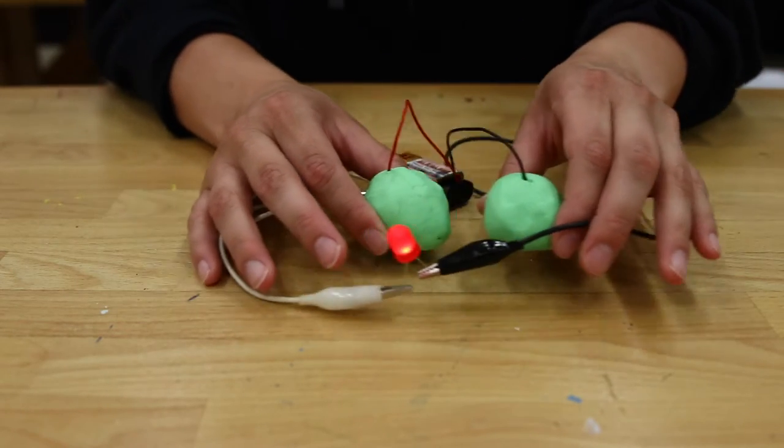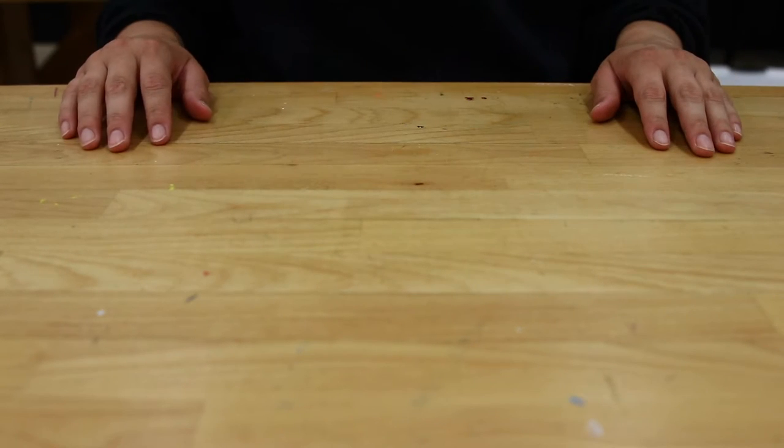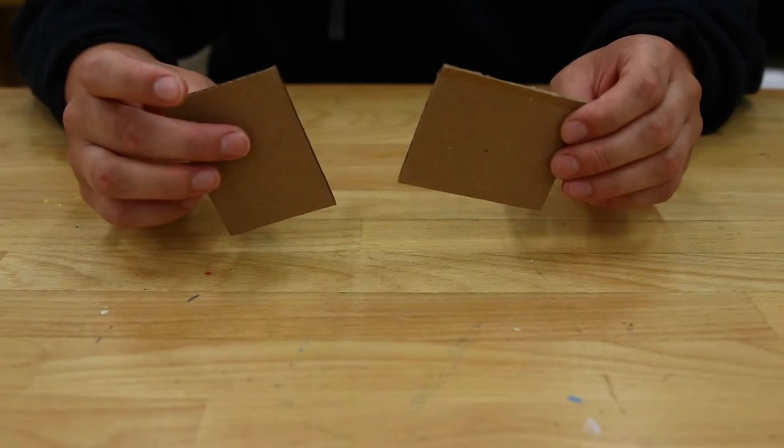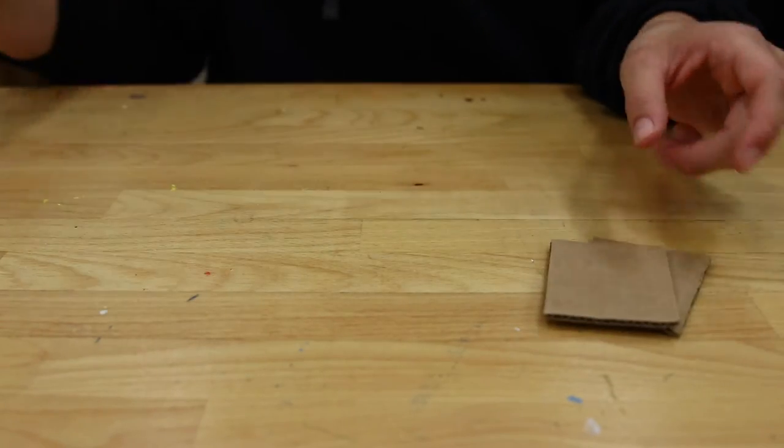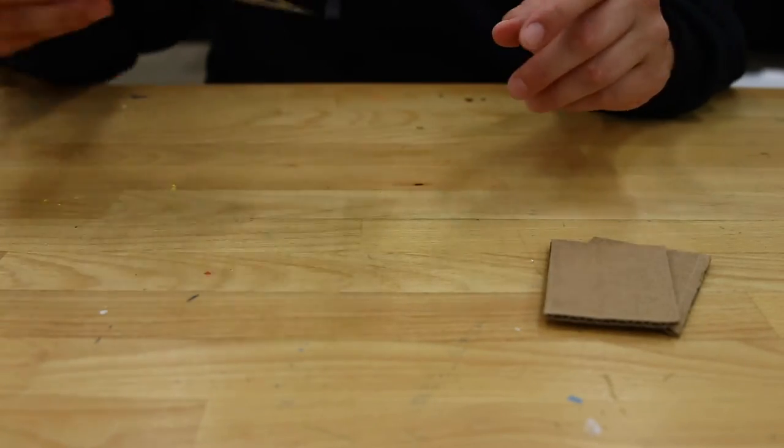For now we're going to put our circuit to the side. This activity will use some additional materials including two pieces of cardboard, aluminum foil,